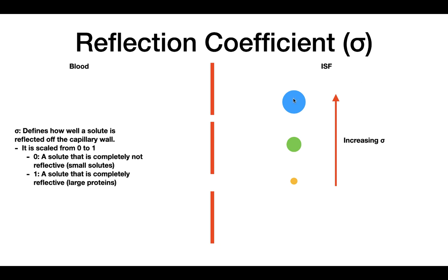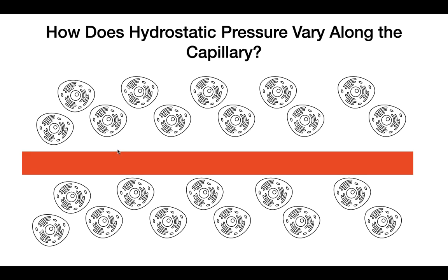So putting this all together — how do hydrostatic pressure, osmotic pressure, and fluid movement vary along the length of the capillary? The hydrostatic pressure tends to decrease along the length of the capillary. What we see here is the capillary and the ISF with all the cells outside of it. The pressure at the beginning of the capillary tends to be 35 mmHg, and the pressure at the end tends to be around 15 mmHg.